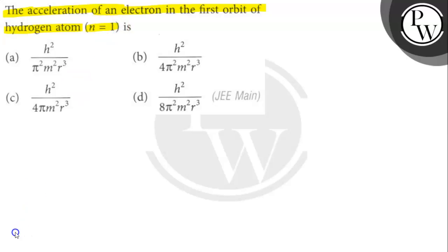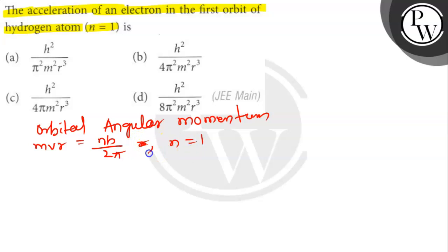Here n is given as 1. The orbital angular momentum mvr equals nh by 2π. Since n equals 1, mvr equals h by 2π.